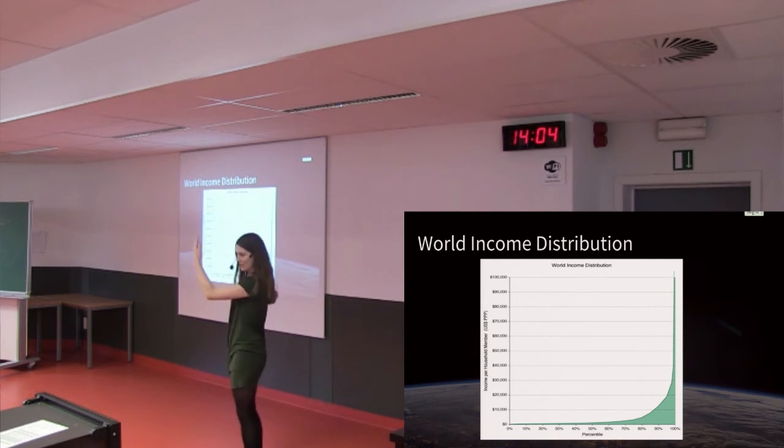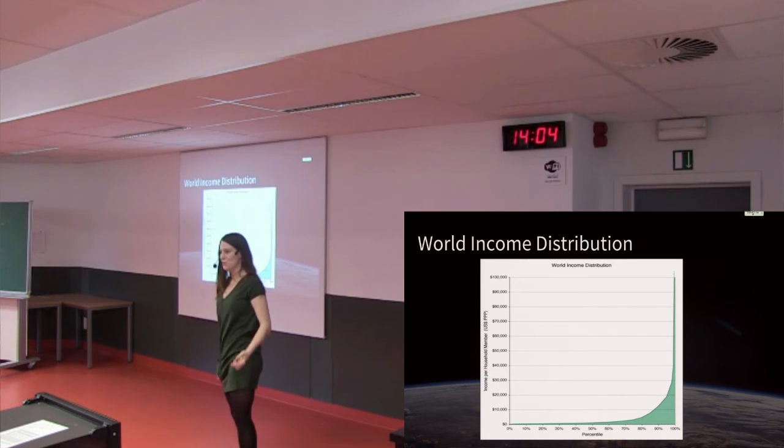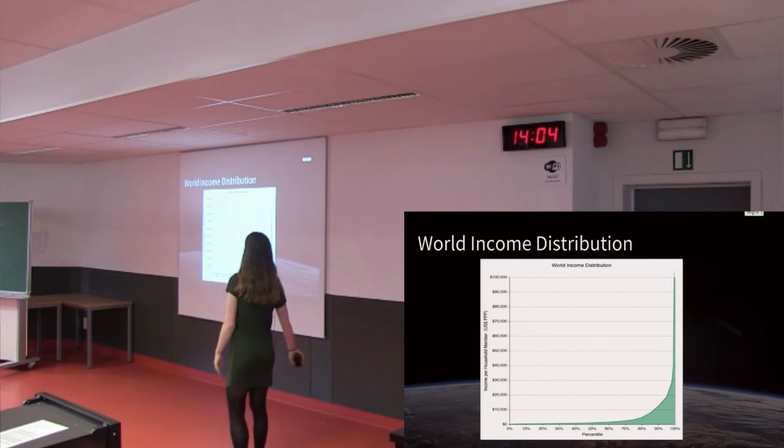And, in fact, I've had to cut the graph off because if I was to try and graph the income of everyone in the entire world using this scale, that graph would go 40 stories into the air. So, there really is such a huge, huge difference between the very poorest people in the world and the very richest people in the world.